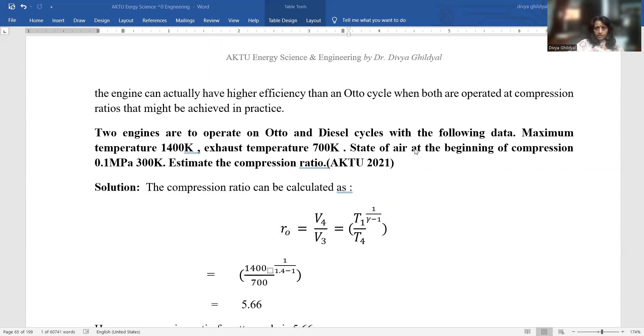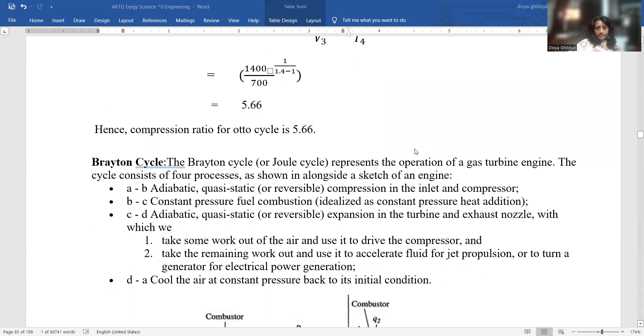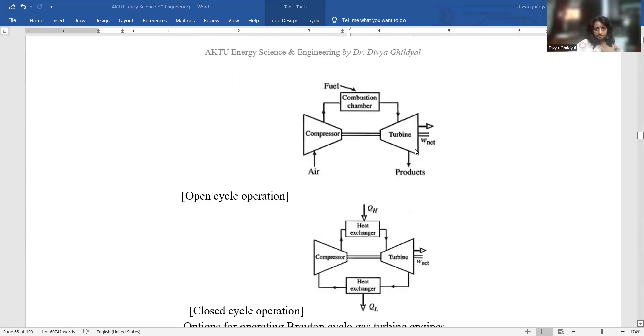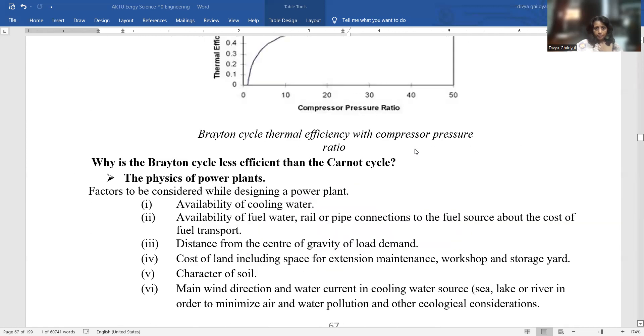Brayton cycle represents the operation of a gas turbine engine. The cycle consists of four processes: adiabatic compression, constant pressure fuel combustion, adiabatic reversal, and the jet engine components and corresponding thermodynamic states. Brayton cycle is less efficient than Carnot cycle.